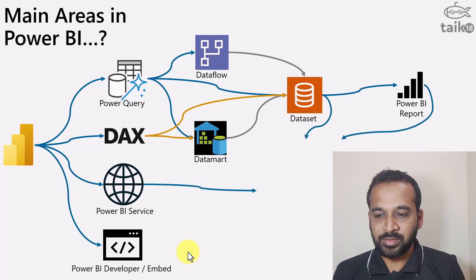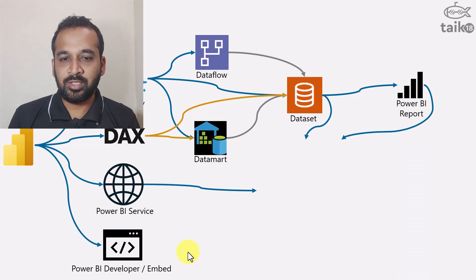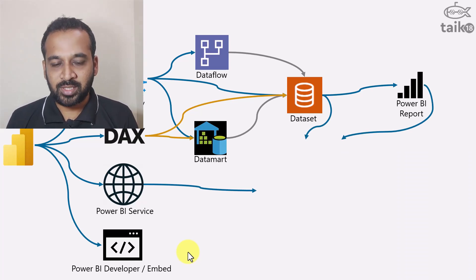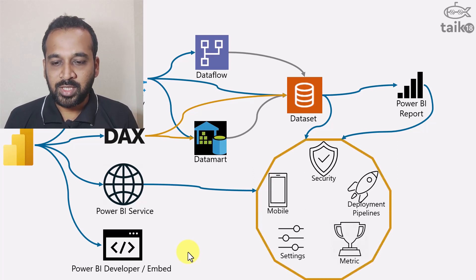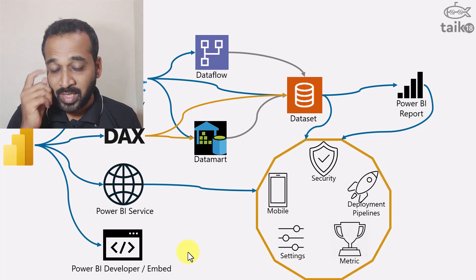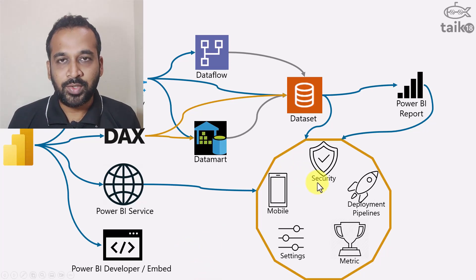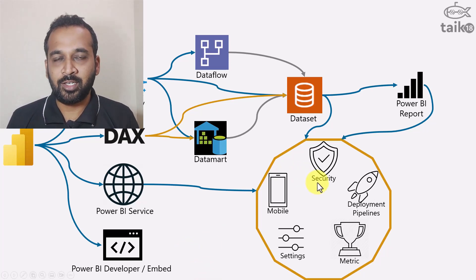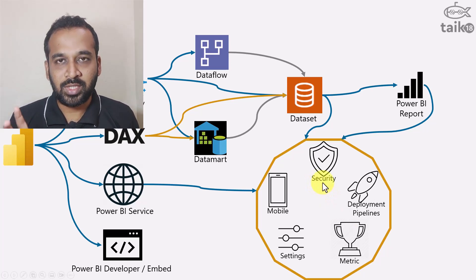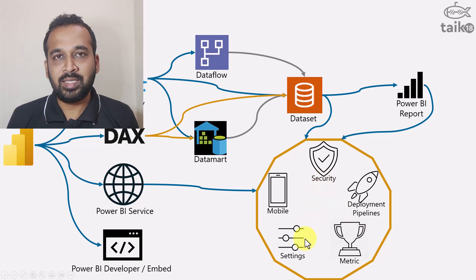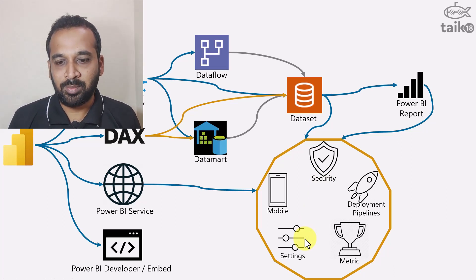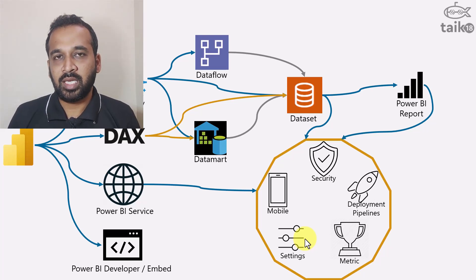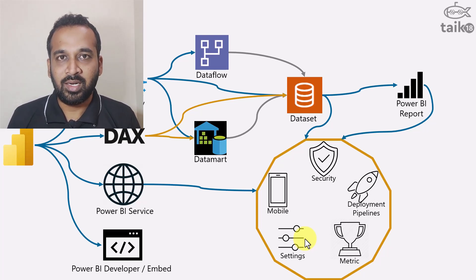The third major area is Power BI service. The data set, Power BI service, and Power BI report functionality all come into Power BI service. There are multiple areas to learn here. One major area is security — row-level security and other access management — including sharing reports with other users. Also tenant settings: if you want to enable features at the tenant level, you can do that through admin tenant settings. Capacity management, if you are using Power BI Premium features, can also be controlled through tenant settings.